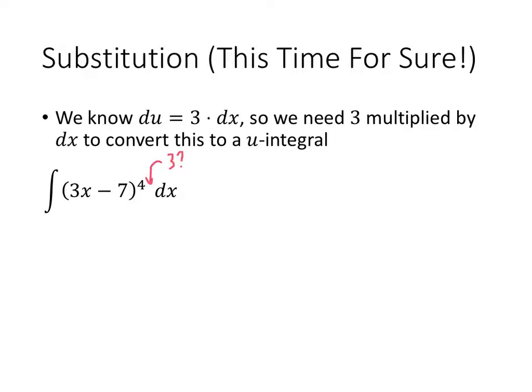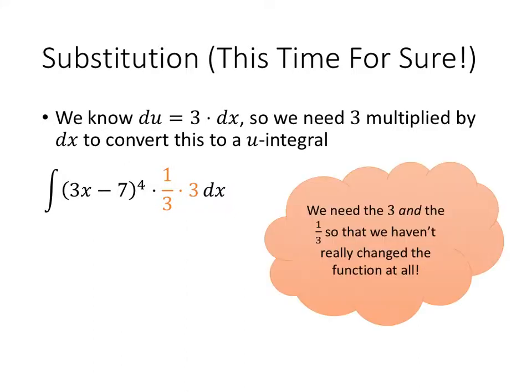But we can't just put a 3 there. That would change the value of our integral. So what we do instead is we put in a 3 and a one-third. We need both the 3 and the one-third so that we haven't actually changed the value of our function.